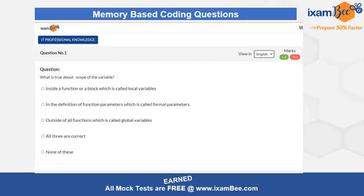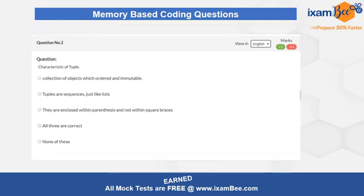So now without wasting any time, let's start. The very first question on your screen is about the scope of a variable — you have to answer about that from the five options shown. Take your time; pause the video if needed. The second question is based on the characteristics of a tuple, and it is from DBMS. Again, pause if you need more time and don't take more than half a minute to read and answer.